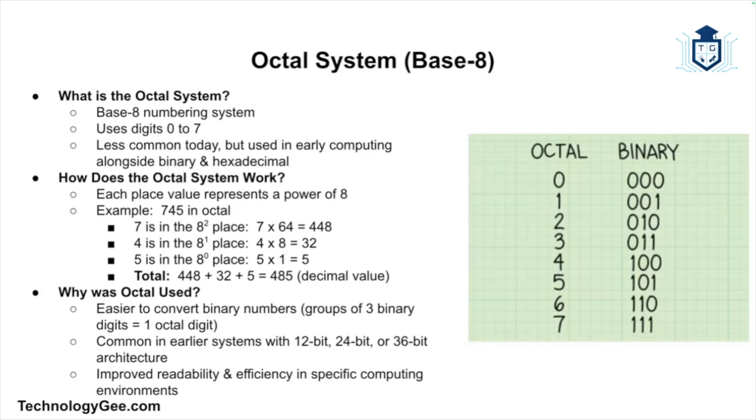Why was octal used? In early computing systems, octal made it easier to read and process binary numbers because computers often work with 12-bit, 24-bit, or 36-bit systems. Since three binary digits perfectly convert to one octal digit, it was more efficient to use in certain environments.